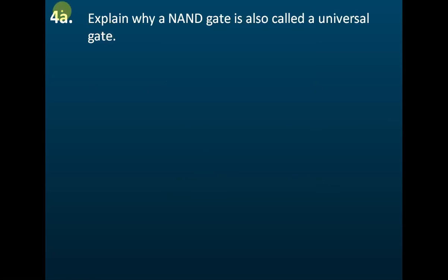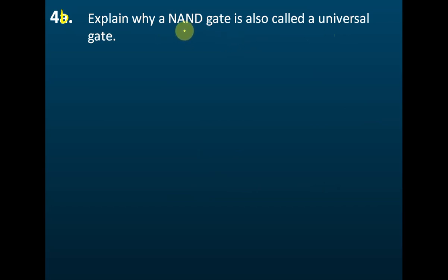This one should be 4b. So 4b explains why a NAND gate is also called a universal gate. A NAND gate can be used to build all other gates, and therefore it's called a universal gate because we can use combinations of NAND gates to build all the other gates.